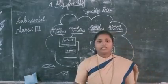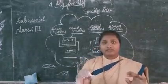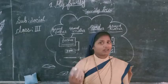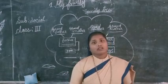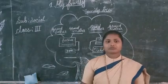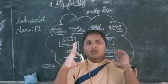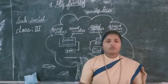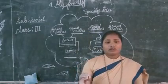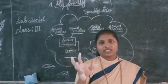In a joint family, it is a big family where father, mother, grandparents, grandmother, aunts, and uncles all live together. It's a big family called a joint family. A single parent family is one in which only either of the parents lives with their children.